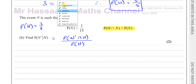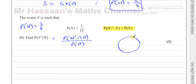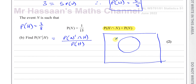The probability of H intersection N equals the probability of N. What that means is, on a Venn diagram, N must be completely inside H. Because if the intersection of H and N equals N itself, then N is fully contained within H. For example, if H were all numbers 1 to 10 and N were the even numbers, then the intersection of H and N would be all of N. So N is completely inside H, and P(N) equals 1 over 15.